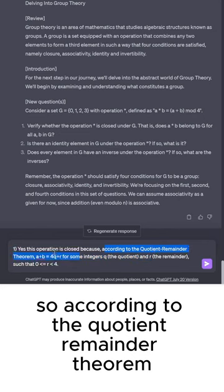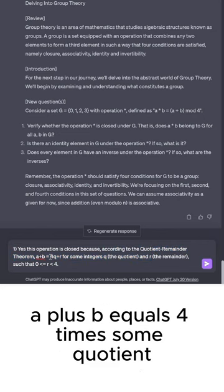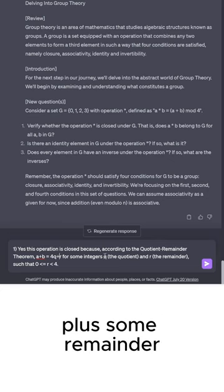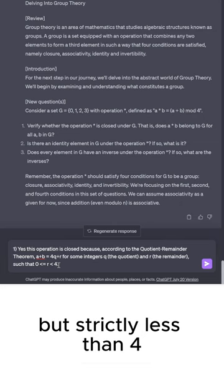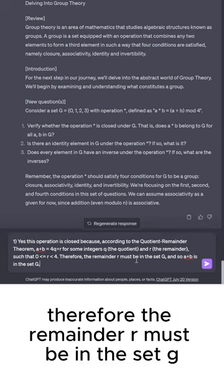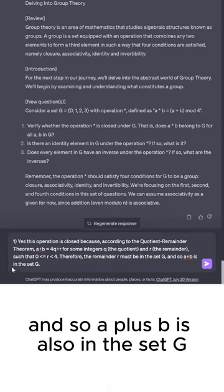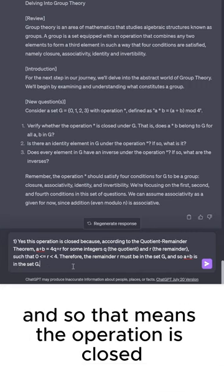So according to the quotient remainder theorem, a+b equals 4 times some quotient plus some remainder, such that this remainder is greater than or equal to 0, but strictly less than 4. Therefore, the remainder r must be in the set G, and so a+b is also in the set G. And so that means the operation is closed.